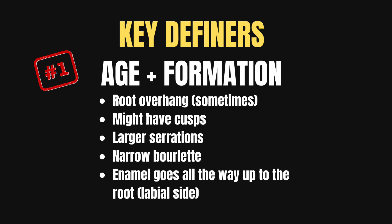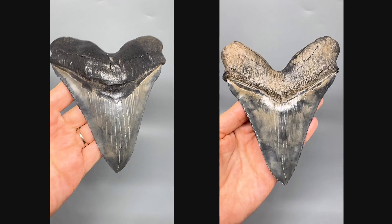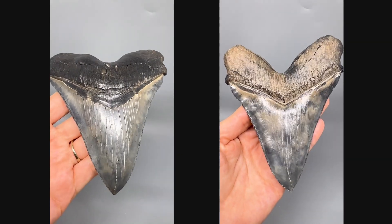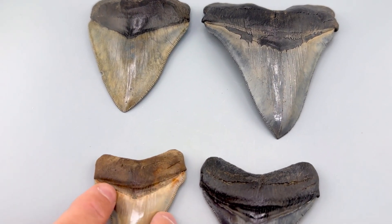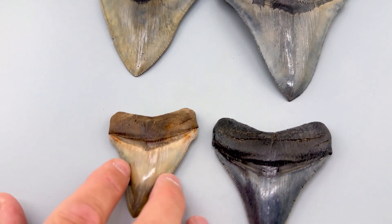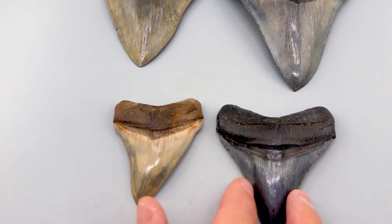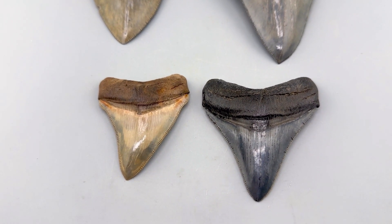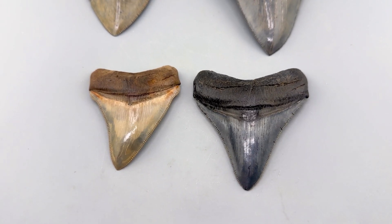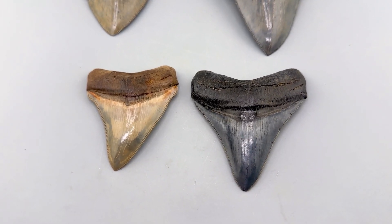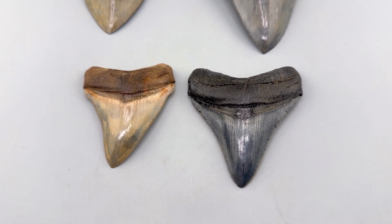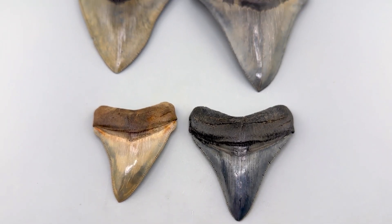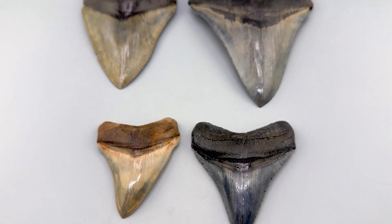Could you call some of these Megalodon? Sure you could. But if you're going to call one a Chubutensis, you can't have a Megalodon in the same formation — they're the same exact two species. You have to delineate somewhere and this is where we do it. Hopefully this is helpful for you guys, and good luck collecting. We enjoy dealing with you every time.